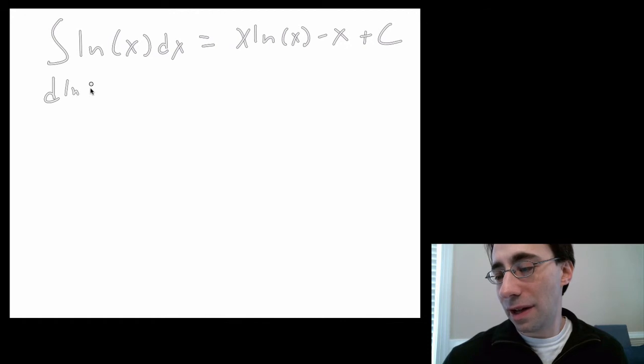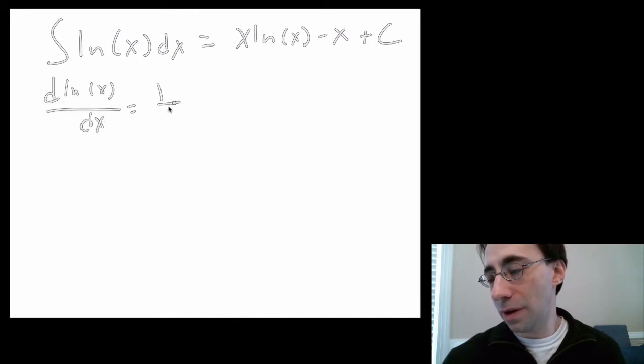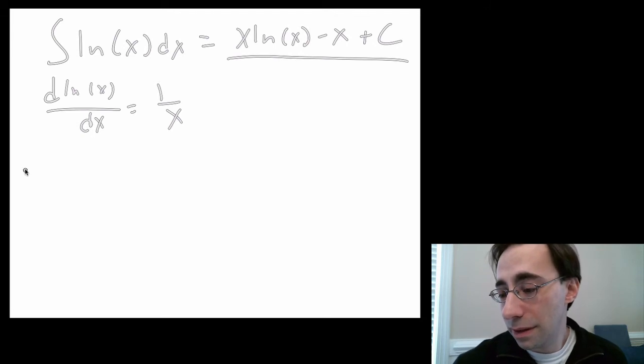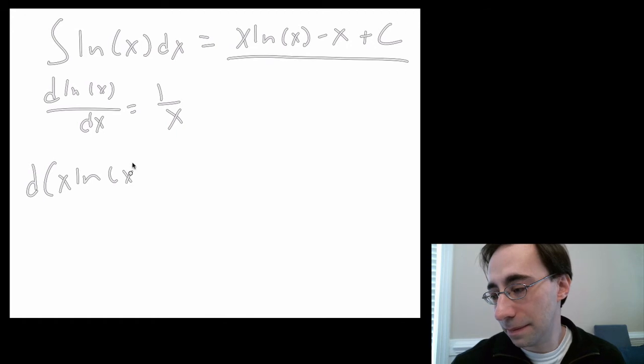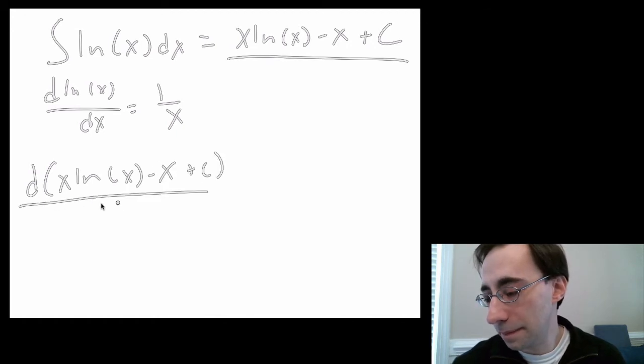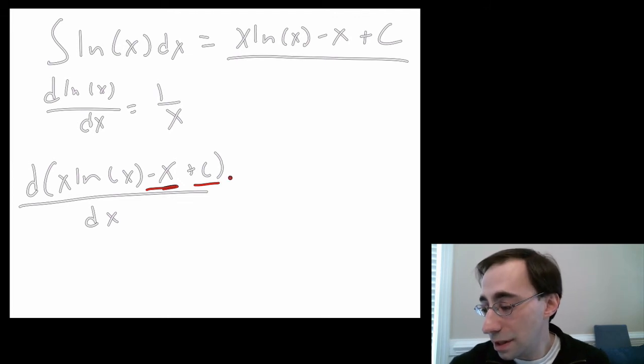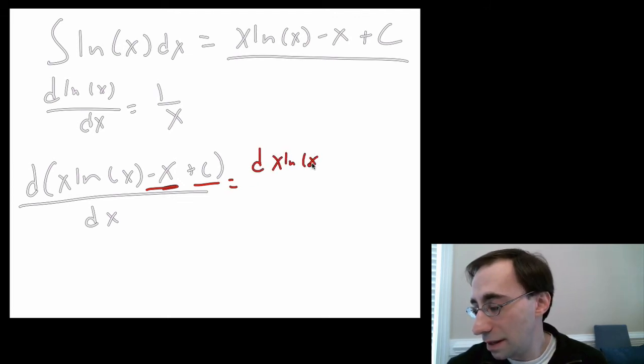If you recall, the derivative of the natural log is equal to 1 over x. So let's differentiate this thing up here. To do that, we need the product rule, the derivative and the linear rule too. So let's work at that. It's good practice. Well, let's see. Let's work at one term at a time. The derivative of x is 1. So this term is going to give you a negative 1. The derivative of a constant is 0. So this term gives you a 0. So this thing is going to equal the derivative of x ln(x) dx minus 1.